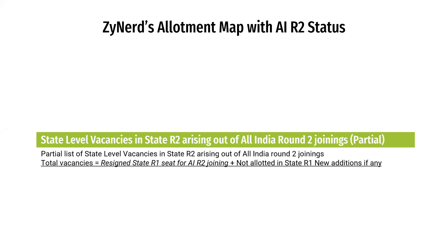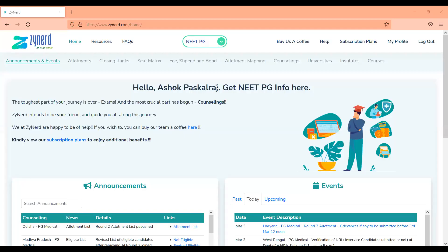The third set of information you can derive is state-level vacancies in state Round 2 arising out of All India Round 2 joinings. When a candidate is allotted an All India Round 2 seat and joins it, if they had also held a state Round 1 seat, that state seat must become vacant — because they are admitted in All India Round 2 and are out of state counseling. This set of state-level vacancies can be derived from the allotment map.